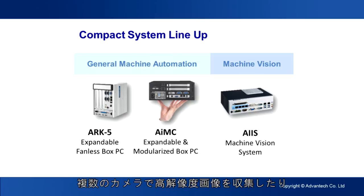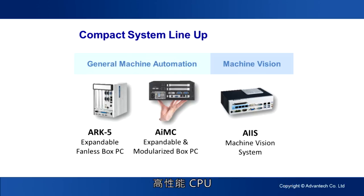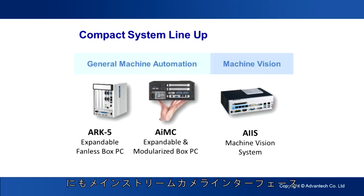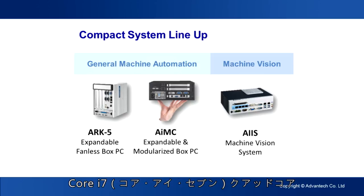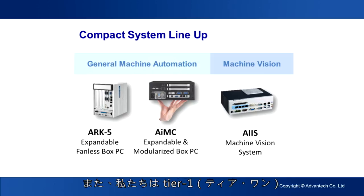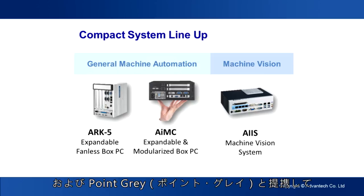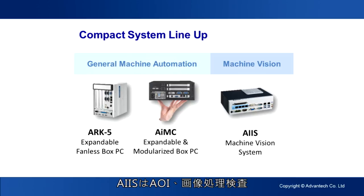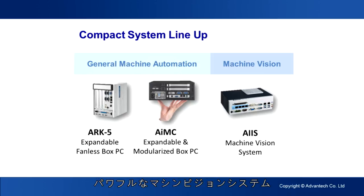Furthermore, we also focus on vertical applications, so we developed AIVS as a machine vision system. Machine vision systems require high CPU computing power for multiple cameras to do high-resolution image acquisition and high frame rate capture. The machine vision system must also have mainstream camera interfaces. AIVS supports a Core i7 quad-core CPU and up to four PoE or USB 3.0 cameras. We also collaborate with tier-one camera vendors Basler and Point Grey to do full compatibility and bandwidth testing. AIVS is the most reliable and powerful machine vision system for applications such as AI vision inspection and vision-guided robotics.